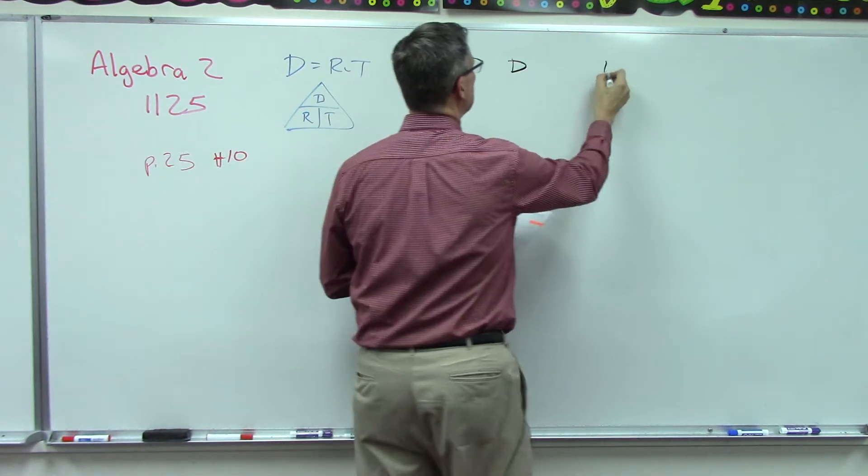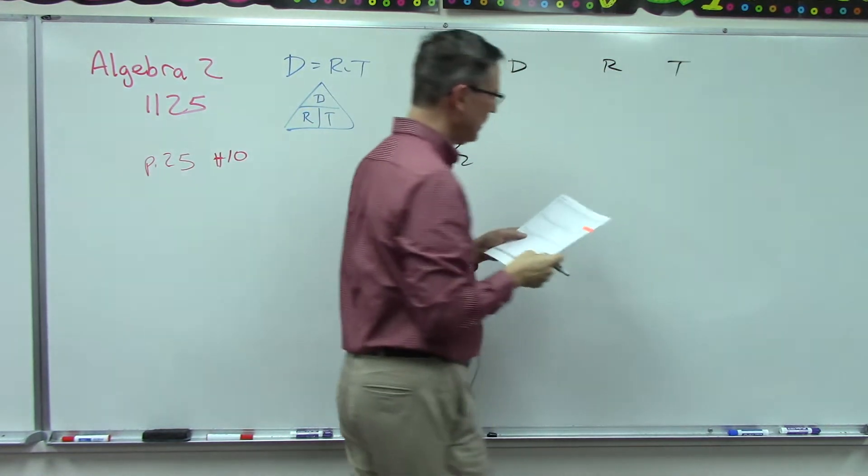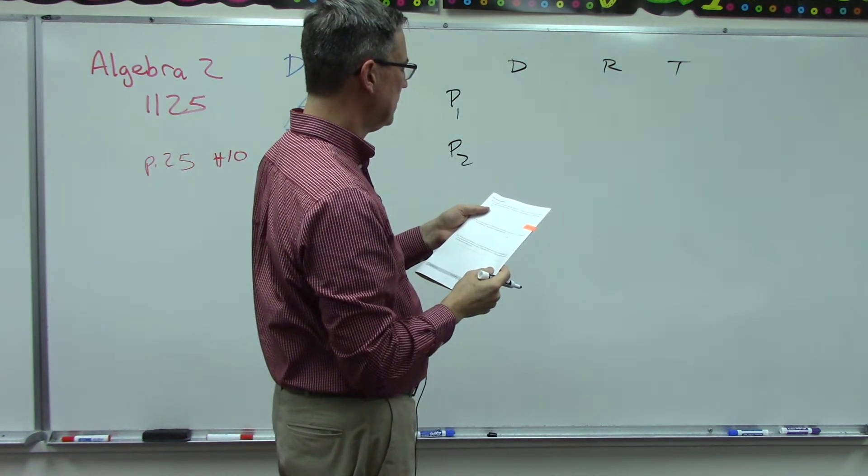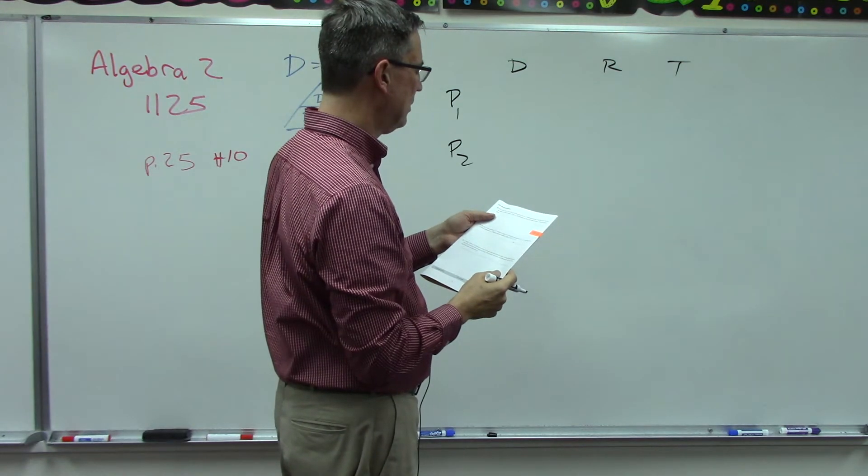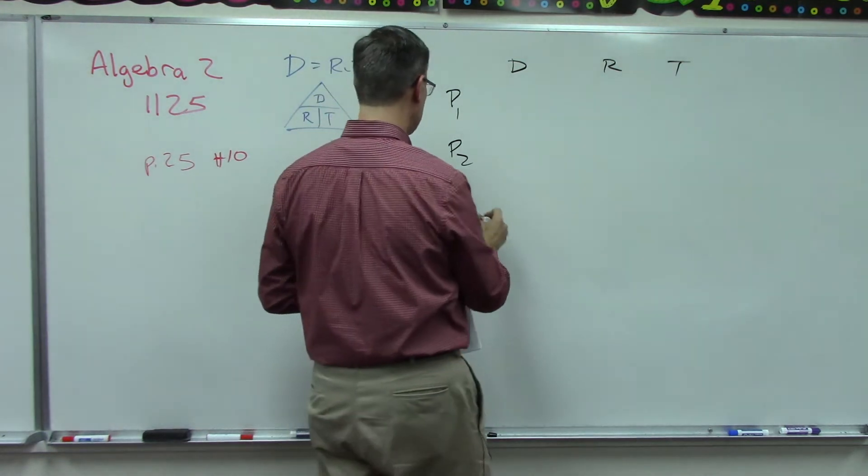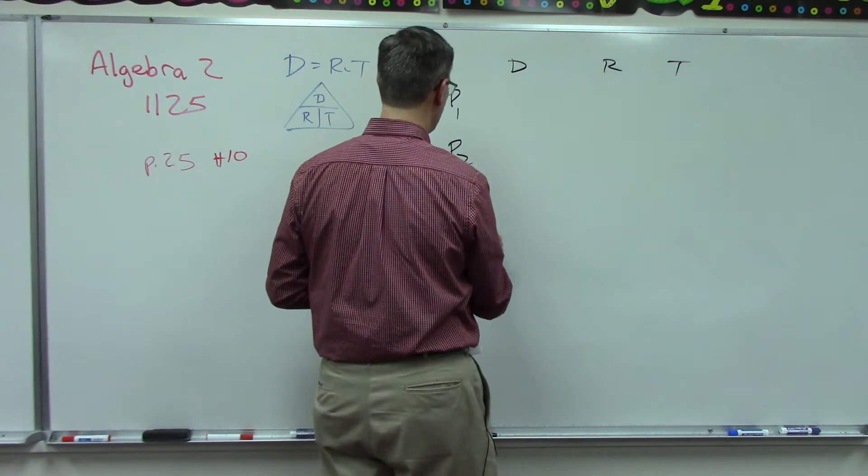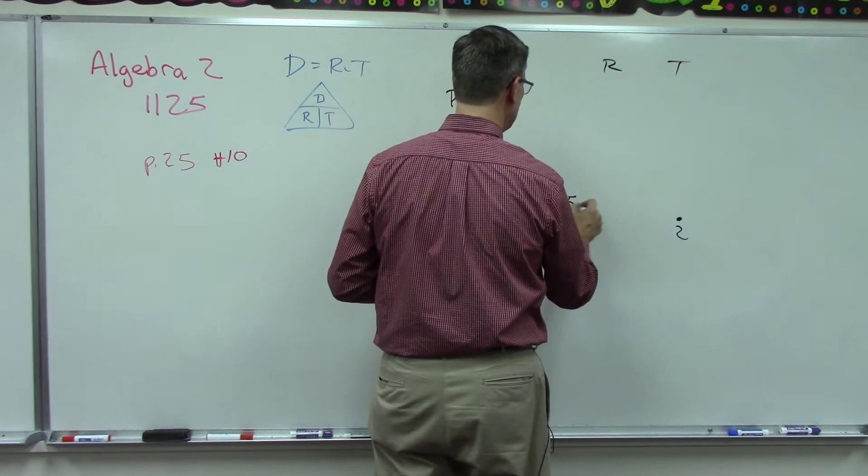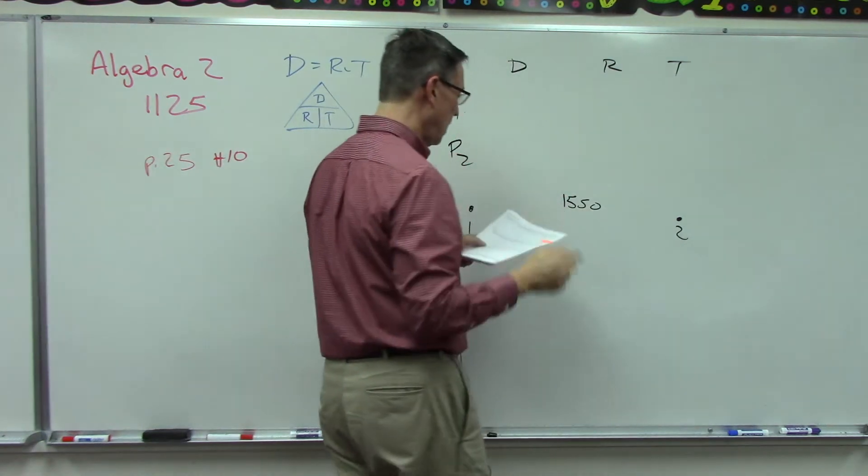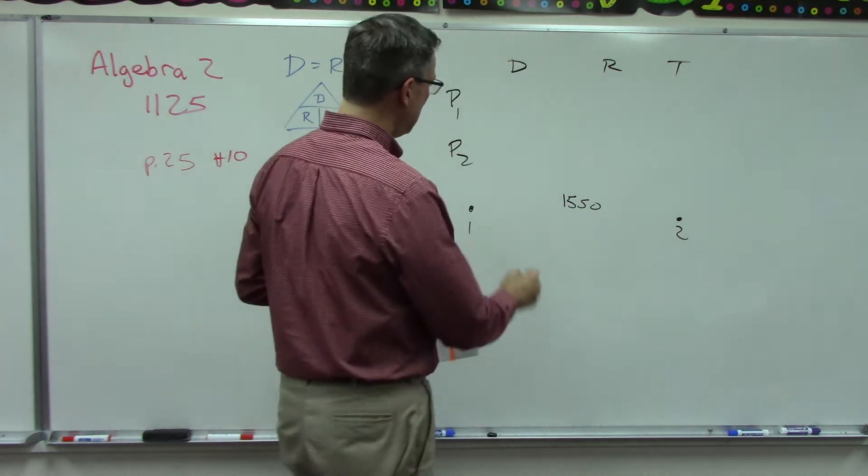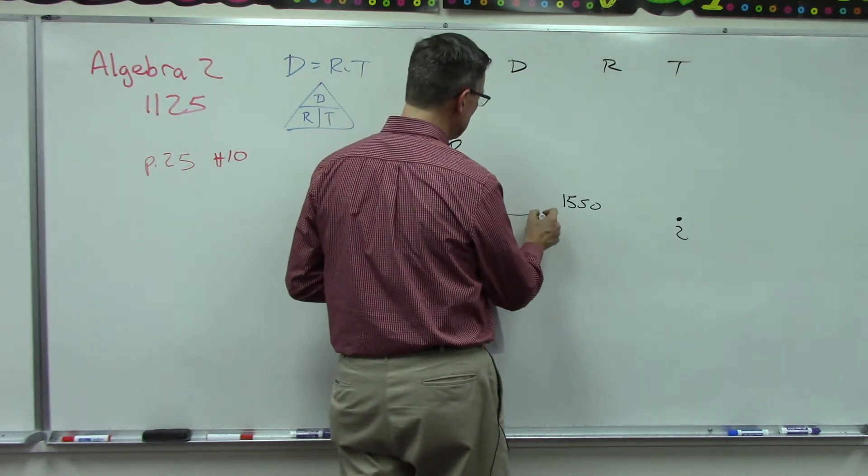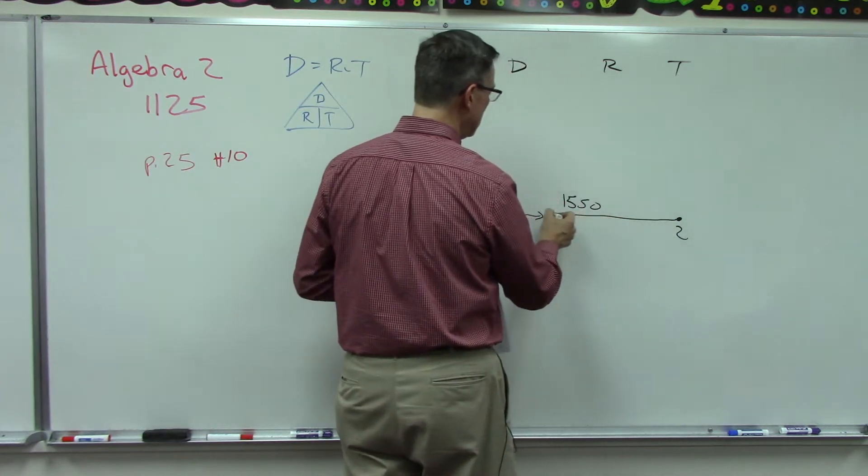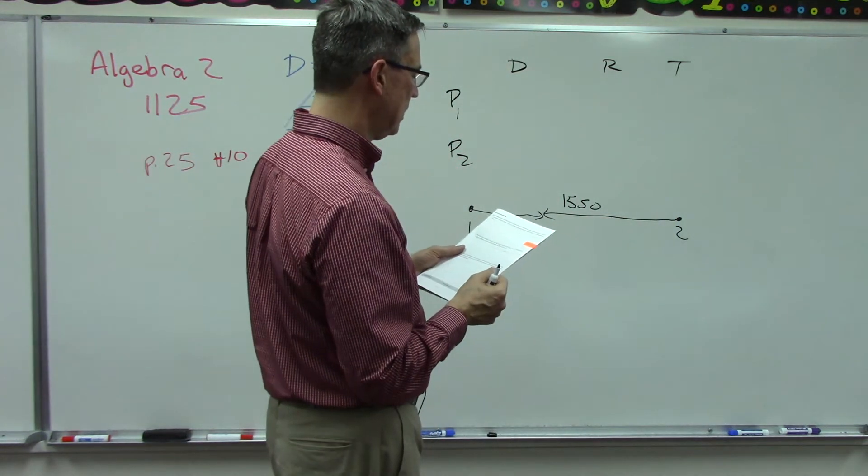We have distance, rate, time and looking at it to see what we know. It says two planes start at the same time from points that are 1550 kilometers apart. So here's point one, there's point two, they are 1550 kilometers apart. One of them is flying this direction, let's say he only goes that far, and this one is going further.